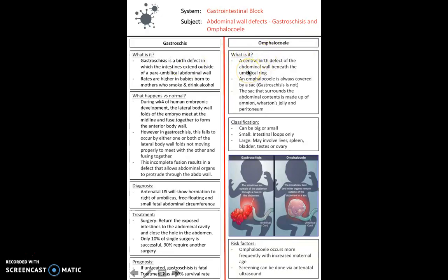Omphalocele is grouped with gastroschisis because they are similar conditions, but it's important to be aware of the subtle differences. Omphalocele is a central birth defect of the abdominal wall beneath the umbilical ring, and it is always covered by a sac — whereas gastroschisis isn't. The sac surrounding the omphalocele is made up of amnion, Wharton's jelly, and peritoneum, with the intestines, liver, and other organs remaining outside the abdomen within this sac. Omphaloceles can be large or small; small ones may contain only intestinal loops, while large ones can contain the liver, spleen, bladder, testes, and ovary. They occur more frequently with increased maternal age, and screening can be done via antenatal ultrasound.